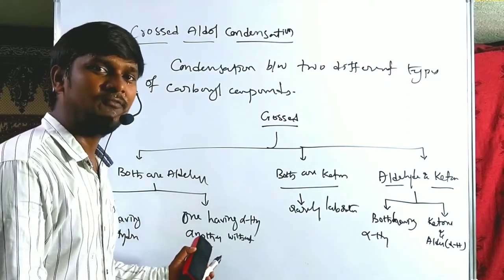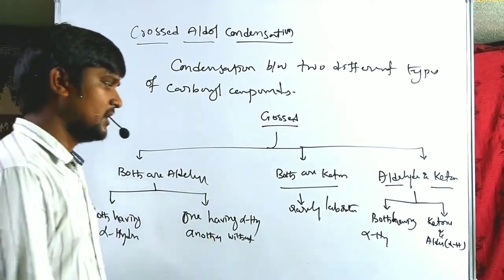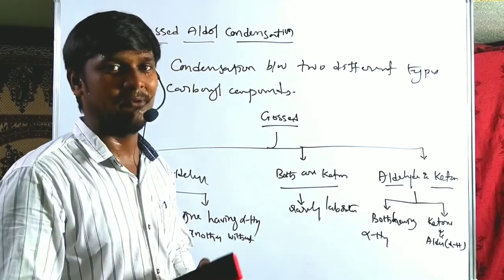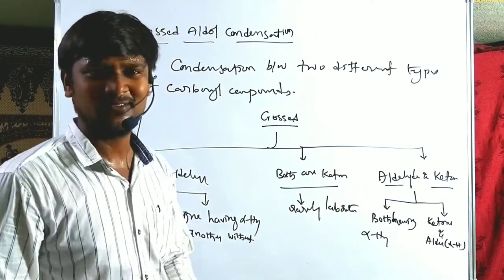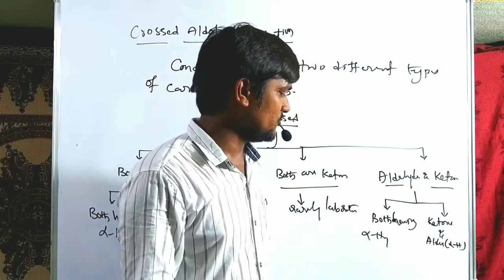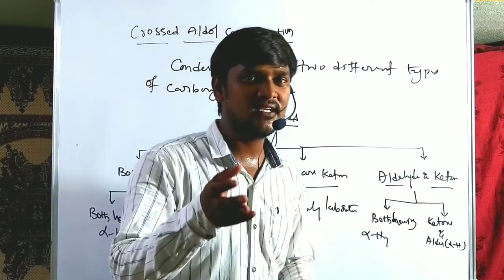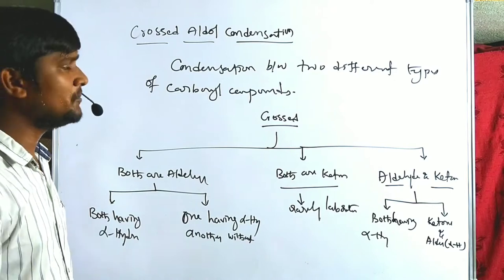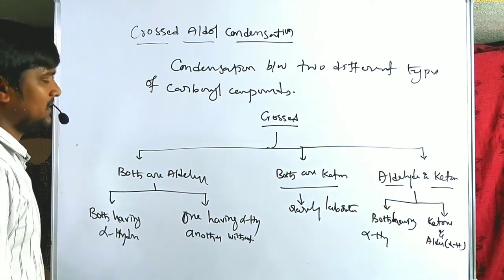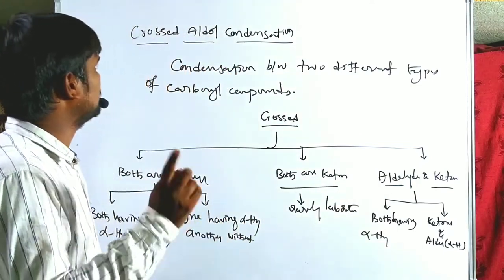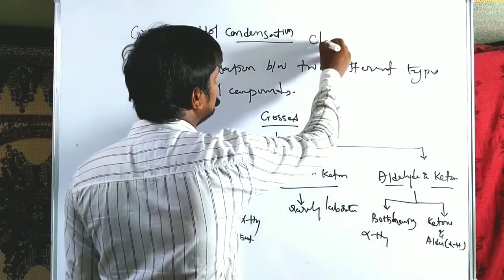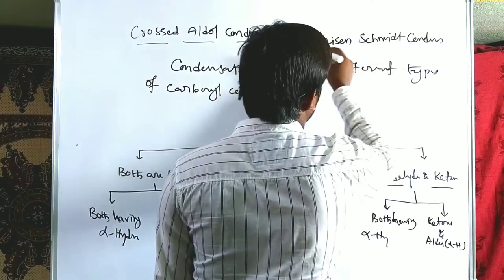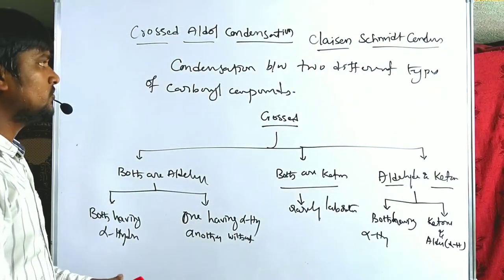For both aldehydes — one with alpha hydrogen, one without — we examine how many types of products result. Ketones are rarely used in laboratory synthetic methods. For the aldehyde-ketone combination, both may have alpha hydrogen, or the ketone has alpha hydrogen while the aldehyde does not. Now let us go through one example with a clear-cut mechanism. Crossed aldol condensation is also called Claisen-Schmidt condensation.